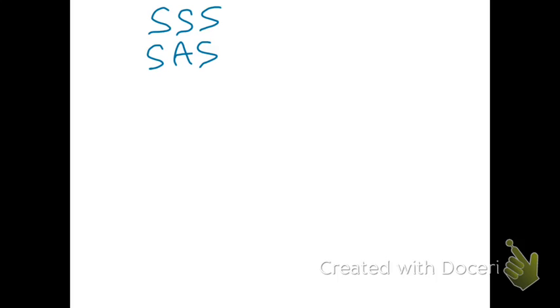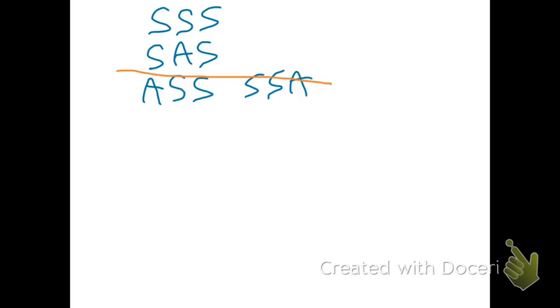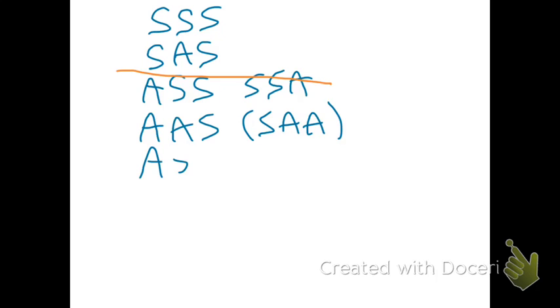Let's recap what we've learned. Here's a way to remember all the congruence shortcuts. We have three S's: Side-Side-Side. With two S's and an A, we can have Side-Angle-Side. If you put the A first, you get a bad word — ASS or SSA — and those are not valid congruence conjectures. With two A's and one S, we have Angle-Angle-Side (same as Side-Angle-Angle) and Angle-Side-Angle — both work. And Angle-Angle-Angle is not a valid conjecture. So the four valid conjectures are: Side-Side-Side, Side-Angle-Side, Angle-Angle-Side, and Angle-Side-Angle.